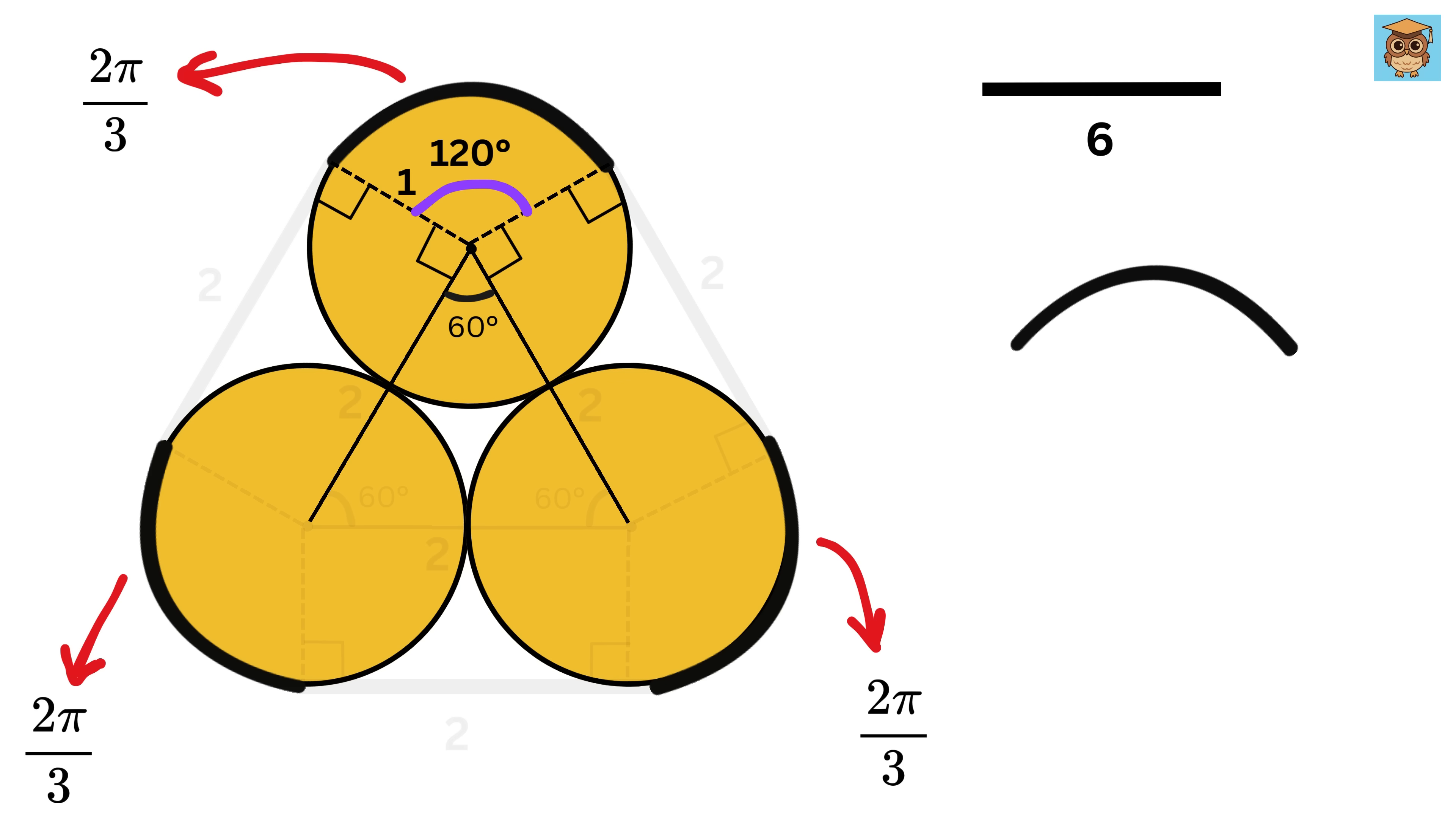So the total length of all the curved parts of the band equals 2π over 3 plus 2π over 3 plus 2π over 3, or 6π over 3, or simply 2π units.